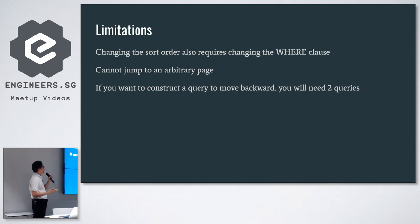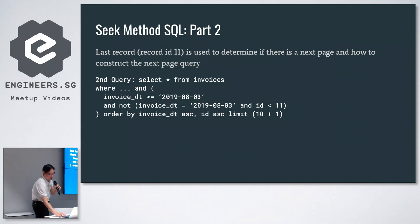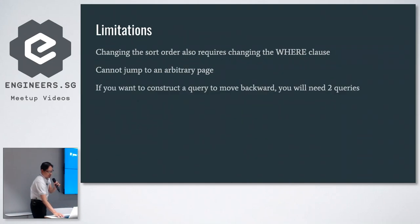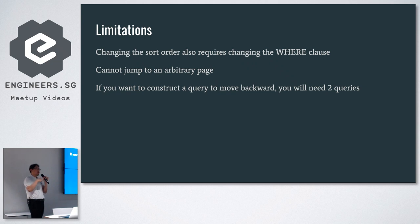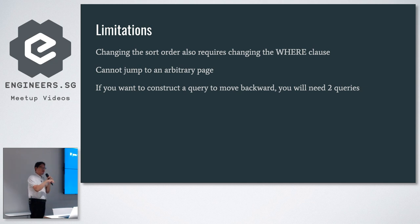One of the limitations of using this method is that because you have to add things to the WHERE clause, if you want to change the sort order you basically have to change that part of the WHERE clause. Also, you can't actually jump to an arbitrary page — if you start at page one, you've got to go to page two, then three, then four. You can't jump from page one to page seven. But this is probably okay for something like a mobile app where somebody is just scrolling through their posts with infinite scroll.